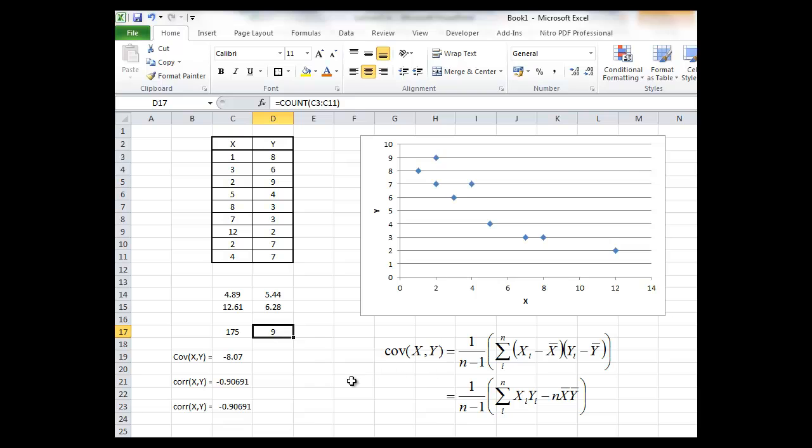In this cell here I've just got the count. I'm being a bit lazy. I've just got Excel to count how many observations there are in the sample and that is the number 9 which is equal to our n in the formula.